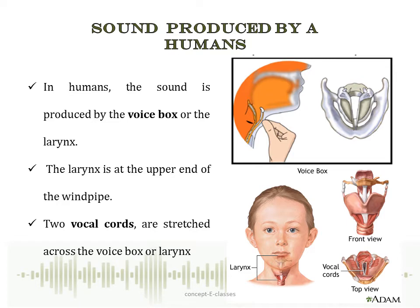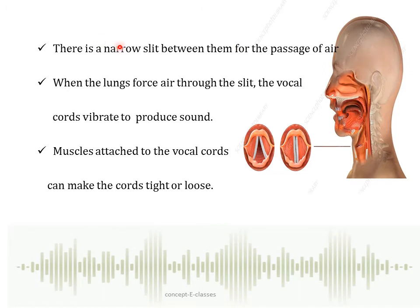Sound is produced when an object vibrates. Now let's see how sound is produced by humans. In humans, sound is produced by the voice box or the larynx. If you place your fingers on the throat and try swallowing, you can find a hard lump that seems to move — this is called the voice box or larynx, situated at the upper end of the windpipe. There are two vocal cords stretched across the voice box, with a narrow slit between them for the passage of air. When the lungs force air through the slit, the vocal cords vibrate to produce sound.